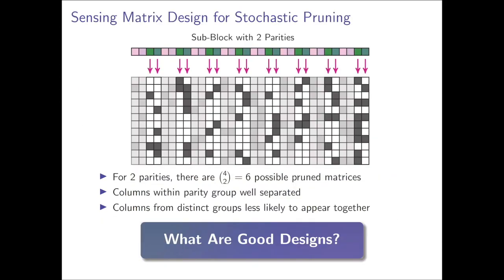We also offer a one-slide summary for the design challenge for a matrix that's going to be stochastically pruned. So suppose that you have two parity bits, then the columns of A will be partitioned into four sets, and then these sets will be pruned dynamically based on the previous slots. What you want to design for is matrices that once pruned are good compressed sensing matrices. The columns within a parity group need to be well separated, and the columns from distinct groups are less likely to appear together in the pruned A. The question is, what are good designs?